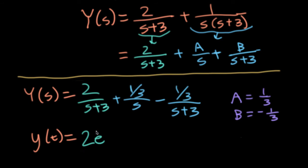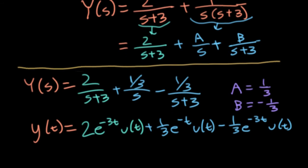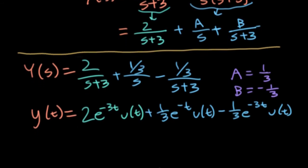I'll have 2 e to the minus 3t u(t). I think that's the first Laplace transform that we did. Plus 1 third e to the minus t u(t) minus 1 third e to the minus 3t u(t). So there's a caveat on this answer that I want to put in that this is for t greater than or equal to zero. But I'll wait till the end to put in that caveat.